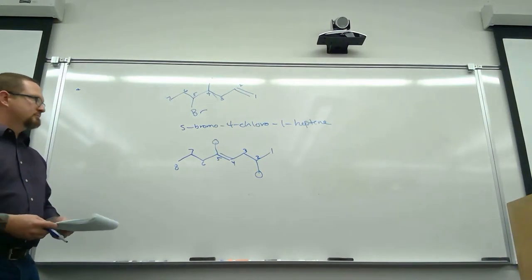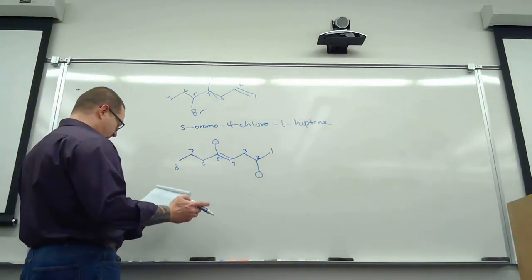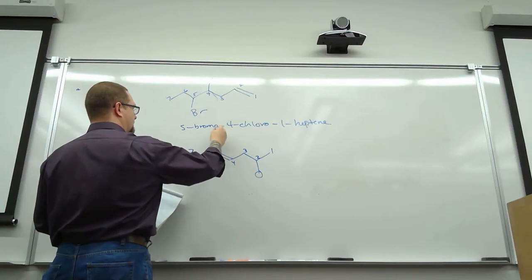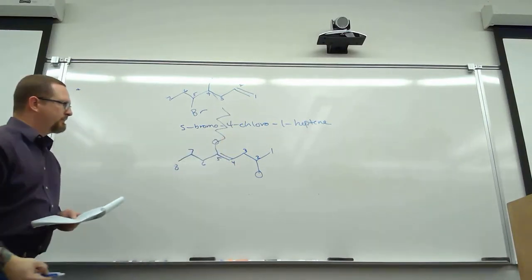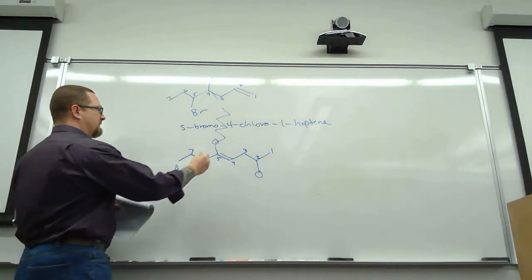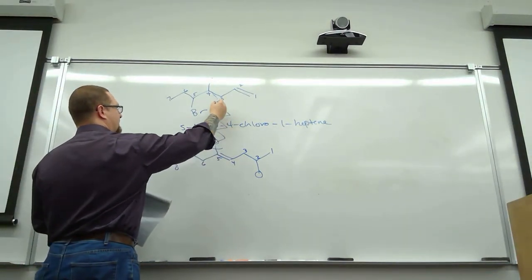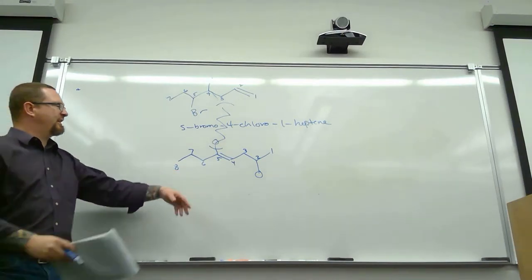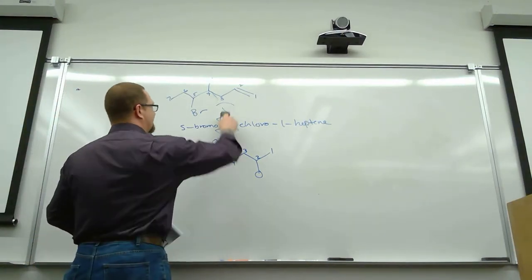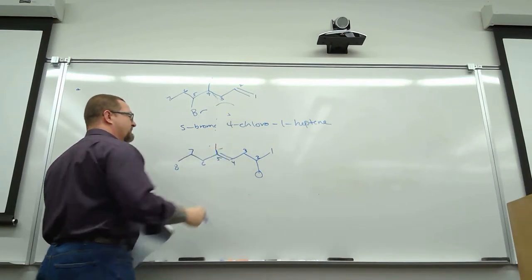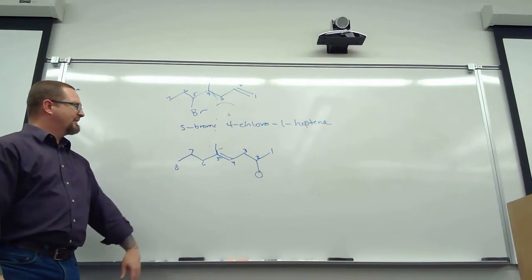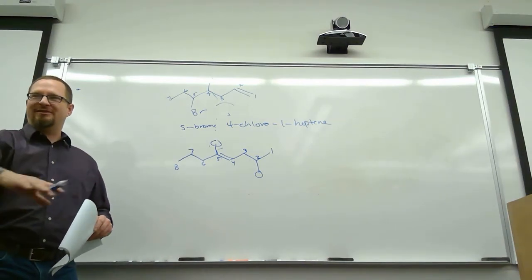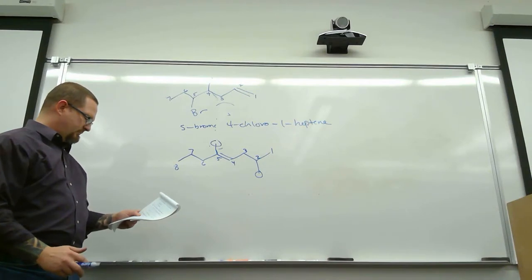The longest parent chain contains the double bond. For instance, if we had an additional chain going through, you'd need to count carefully — the longest chain that goes through the double bond. So it comes back to: longest parent chain which contains the double bond. Let's see here — cyclics.